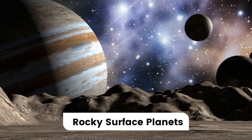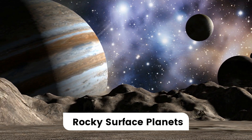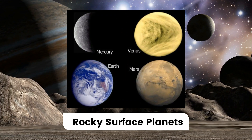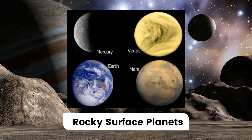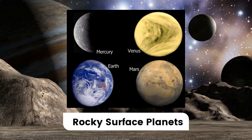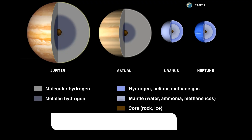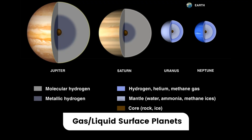5. Rocky Surface Planets: Mercury, Earth, Mars, Venus. 6. Gas or Liquid Surface Planets: Jupiter, Uranus, Neptune, Saturn.